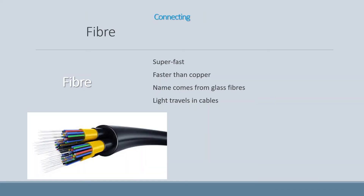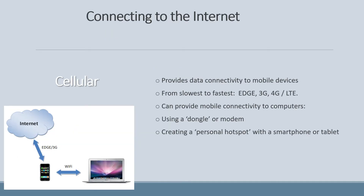Fiber connections are super fast, much faster than cable. Remember that light travels in the cables — it's not copper and not electricity. You can also get a cellular connection if you have a cell phone, for which you need a SIM card — this provides data connectivity to mobile devices. The speeds from slowest to fastest are EDGE, then 3G, then 4G or LTE. It can provide mobile connectivity to a computer via a dongle or modem, or you can create a personal hotspot from your smartphone or tablet to which your computer connects.